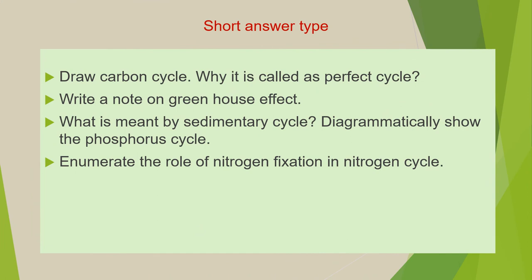Next: draw the carbon cycle and explain why it is called a perfect cycle. Next: write a note on the greenhouse effect. Next: what is meant by a sedimentary cycle? Next: diagrammatically show the phosphorus cycle. The last question of this category is: enumerate the role of nitrogen fixation in the nitrogen cycle.